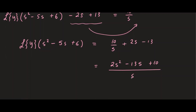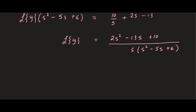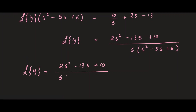So the Laplace transform of y equals (2s squared minus 13s plus 10) divided by s times (s minus 3) times (s minus 2), after factoring the denominator. This can be decomposed using partial fractions as A over s, plus B over (s minus 3), plus C over (s minus 2).